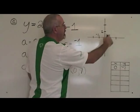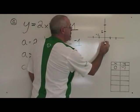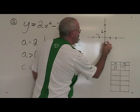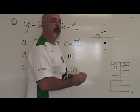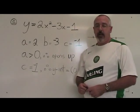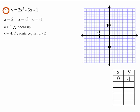In this graph, each of these little dashes represents one unit. So (0, negative 1) will be right here. This is our a, b, c, the direction of our parabola and our y-intercept for example 1.